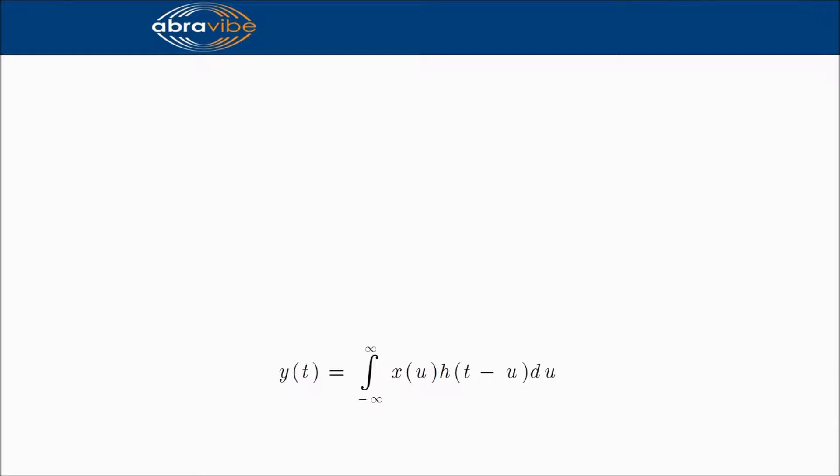So, let us find out what h of t minus u means. To do this, we start with h of u. h of u is the decaying impulse response.